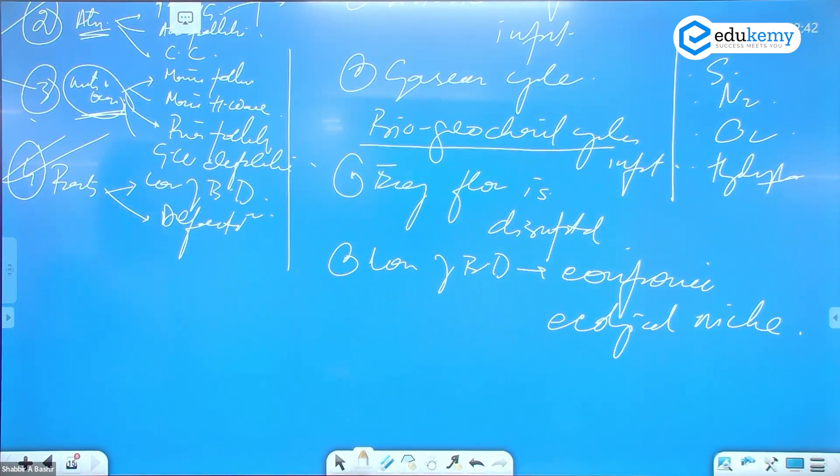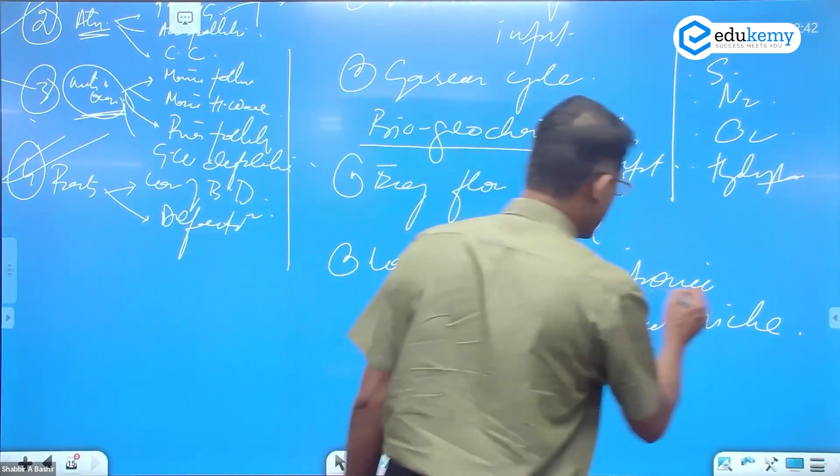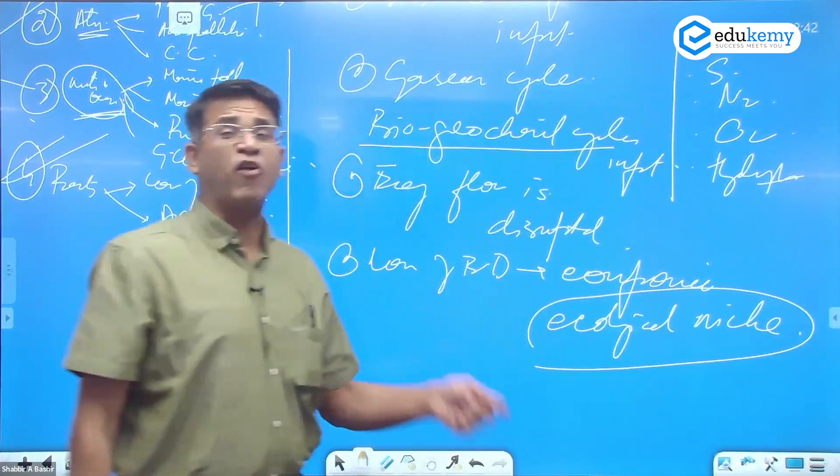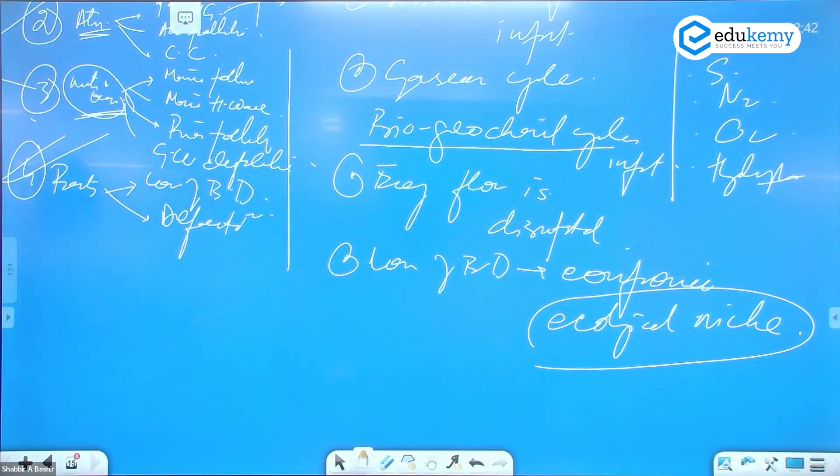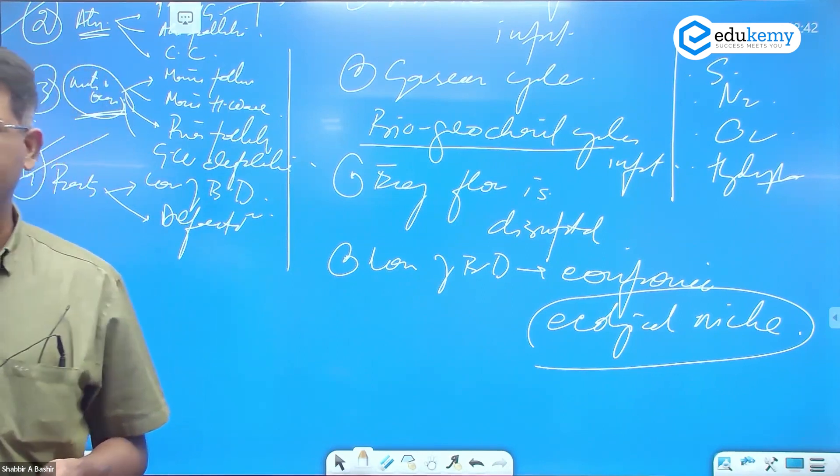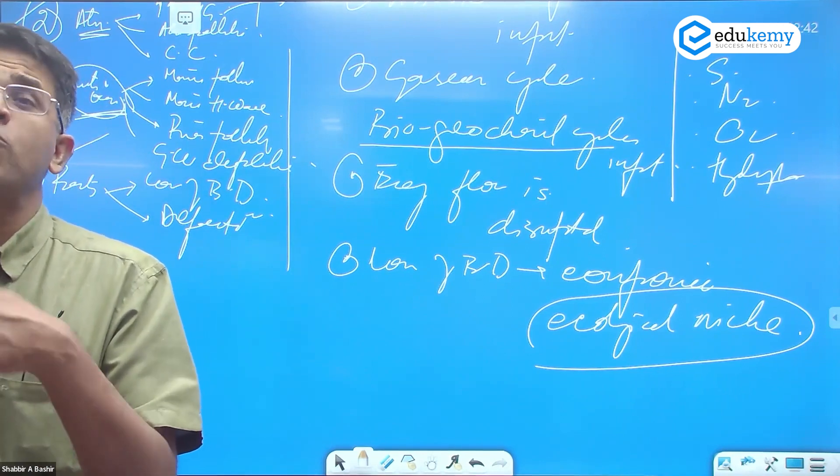What is ecological niche? It is the role that a life form performs as a consequence of its position. Ecological niche is the role that a life form performs by virtue of its position.